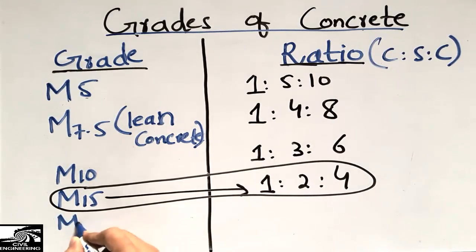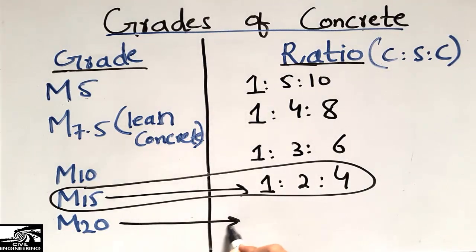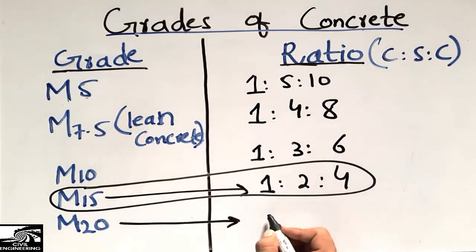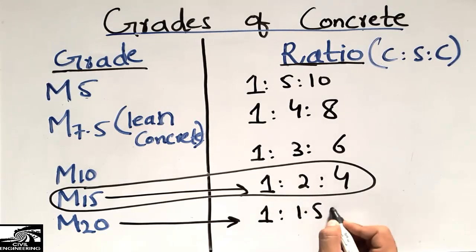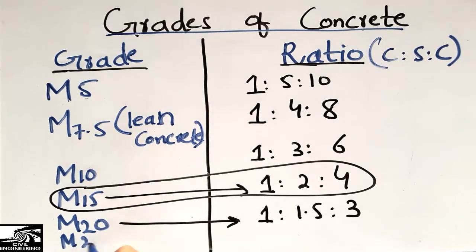The next one is M20, with a strength of 20 megapascals and a ratio of 1:1.5:3. The last grade covered here is M25.